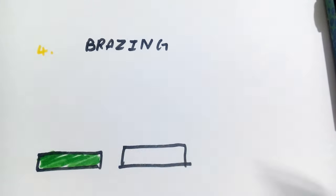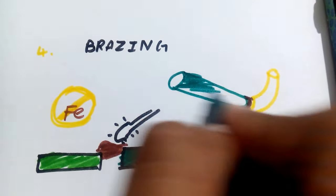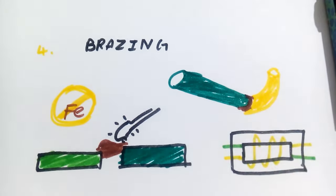The fourth type of joining process is brazing. Here metallic parts are joined using non-ferrous filler metal and is hence used in areas like pipes, heat exchangers etc.